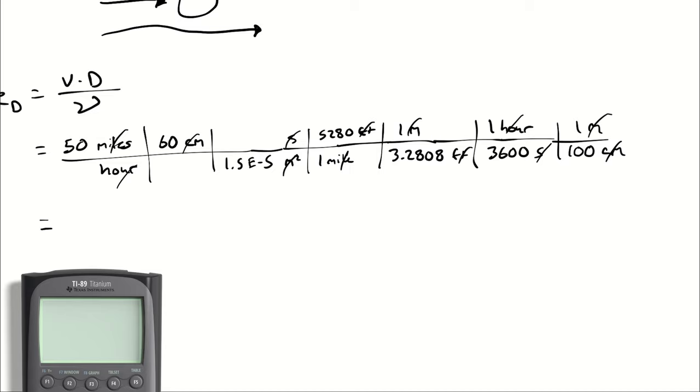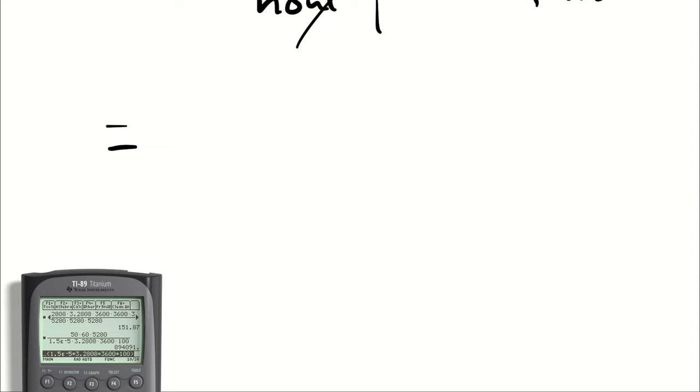Now with our handy dandy calculator, if you would cooperate calculator I would start by turning on. Awesome, thank you. 50 times 60 times 5,280 divided by 1.5 e to the negative fifth times 3.280 times 3600 times 100. We have a Reynolds number of 894,091.